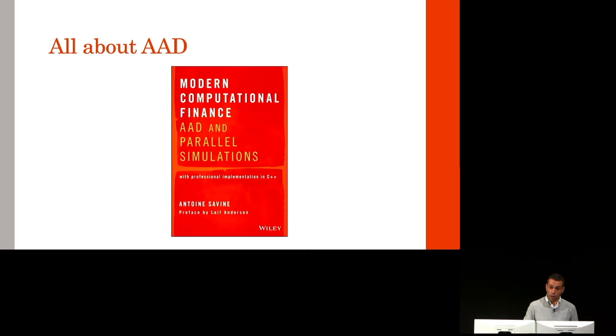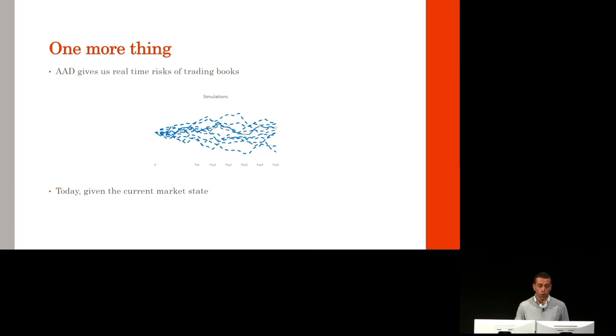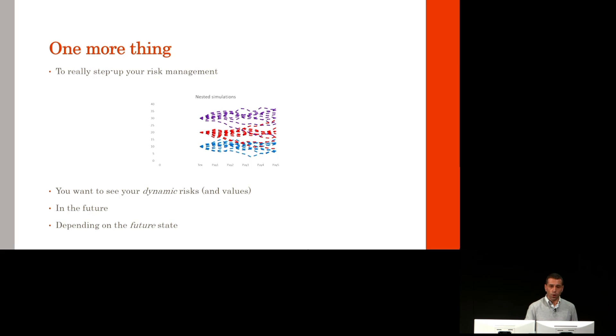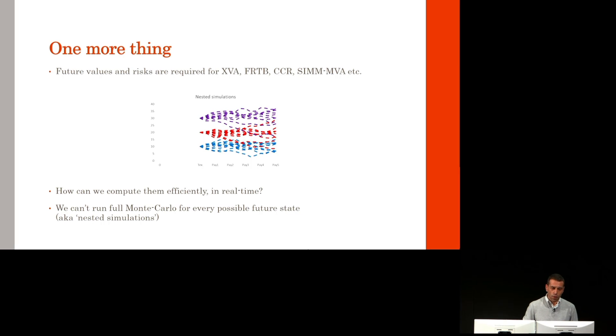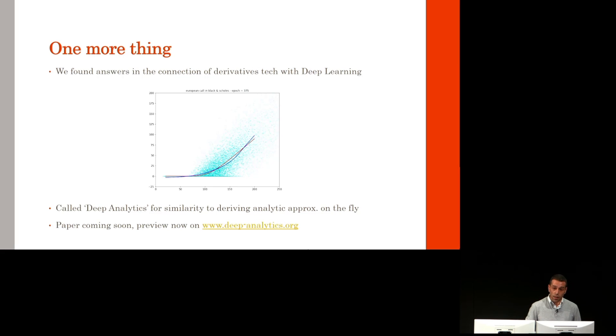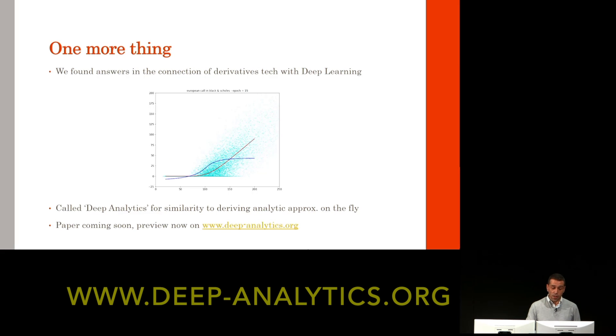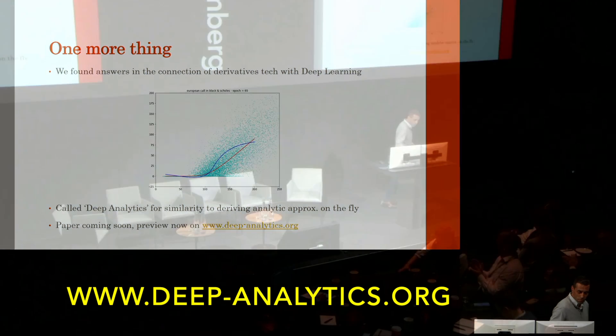I hope I managed to pique your interest. You will find all the details in my book, Modern Computational Finance with Wiley. I would like to leave you with one final thought. AAD gives us real-time risks of trading books, but that's today, given the current state of the market. If you want to really step up your risk management, you want to see your dynamic risks and value in the future, depending on the future state. In investment banks, we don't have a choice. We need these for regulations. So how can we compute them efficiently in real time? We can't run a Monte Carlo simulation for every possible future state. That's called nested simulations, and that's really slow, really inefficient. My colleagues and I have been looking for answers in the past few months, and we have found them in the connection of derivatives technology with deep learning. We call it deep analytics because it's similar to deriving analytic approximations on the fly. We will publish it soon. In the meantime, you can see our preview on deepanalytics.org. Thank you very much for your attention.